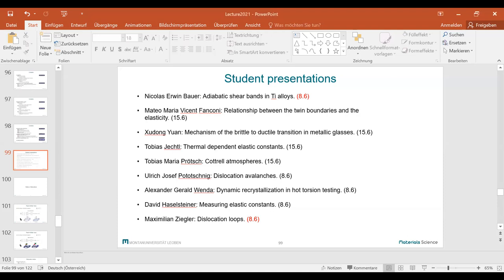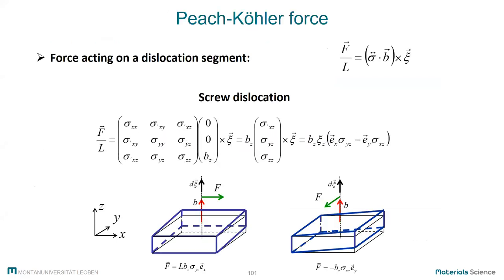We will now move to dislocation motion. The first thing to treat here is the force which a dislocation sees and which is required to move it. This force is called the Peach-Koehler force, given in its general expression here as the force per unit length of dislocation. This is the stress tensor, which has nine components in its general formulation, multiplied with the Burgers vector, and that vector then has to be multiplied with a cross product with the dislocation line, which we always denote by xi. That gives us, in general, the direction of the force.